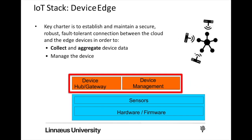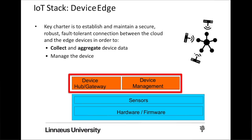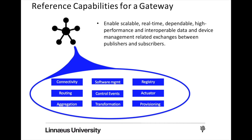Then we have the device hub or gateway. The key responsibility for these devices or hubs is to collect and aggregate data from the sensors. They are not only collecting or aggregating the data, they are also managing the sensors — so sensors are enlisted or listed on these hubs, devices, or gateways. Usually a gateway performs a lot of responsibilities, including the core functionality of managing sensors and lower-level devices, including connectivity, routing data, performing aggregation of data, doing some pre-processing, controlling events for the actuators, and doing sensor registry.